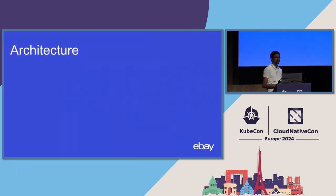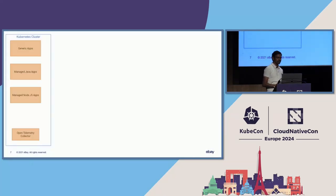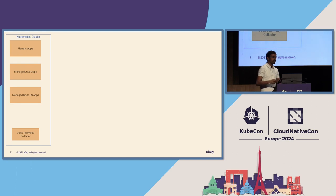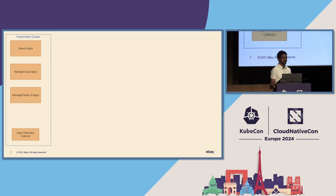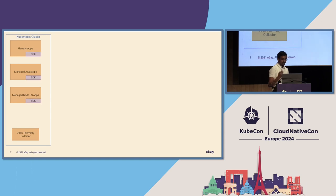From an architecture perspective, every Kubernetes cluster has three kinds of applications that run. Some are what we call generic applications — typically a program written in an arbitrary language that's just deployed on Kubernetes, free flow. On the other hand, we have managed applications that have full support in terms of developer lifecycle, and they have SDKs into which we bundle the OpenTelemetry SDK. Generic applications would need to bundle it themselves and hand-roll instrumentation, whereas managed applications get instrumentation for free.